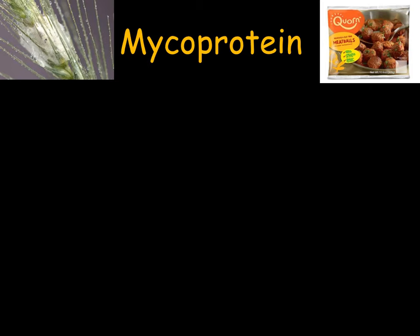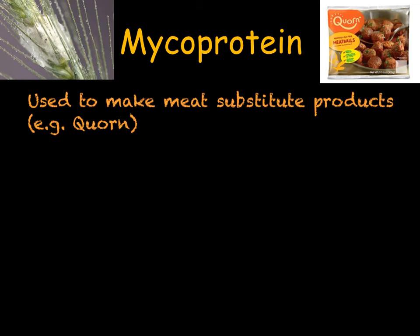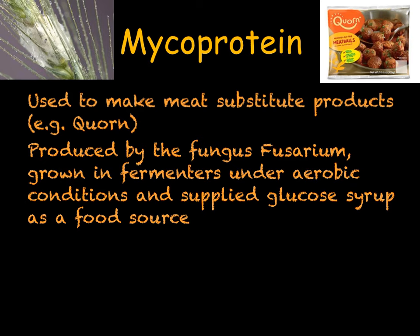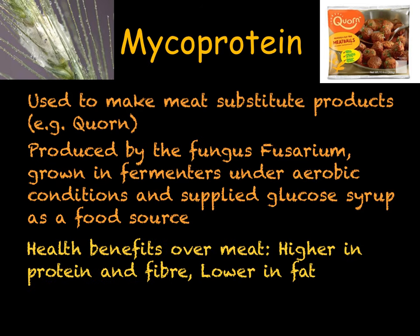You need to know about two uses of microorganisms for your GCSE. The first is mycoprotein, which is used to make meat substitutes for vegetarian meals — in particular it is the main ingredient in Quorn. Mycoprotein is produced by the fungus Fusarium, which is grown in fermenters using glucose syrup as a cheap food source. The fungus respires aerobically, so we supply it with oxygen, and then we collect the fungus to make mycoprotein. Mycoprotein has health benefits over meat in that it contains more protein and more fibre whilst containing much less fat.